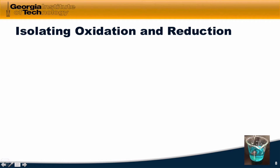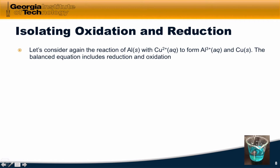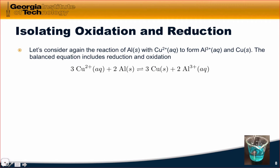To begin with, let's return to the question of whether we can actually build a device that converts chemical energy into electrical energy. Let's consider the reaction of aluminum solid with copper 2+ to form aluminum 3+ and copper metal. The balanced equation includes both reduction and oxidation: copper is reduced from Cu²⁺ to copper metal, and aluminum is oxidized from aluminum metal to Al³⁺.